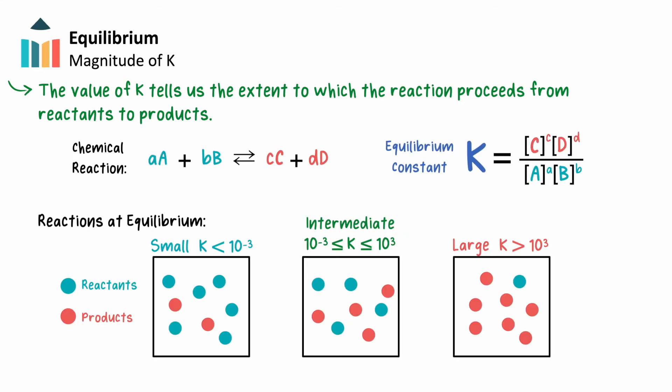Let's see extremes of this visually, with particle representations of exaggerated K values. When K is small, meaning less than 10 to the negative third, we see a lot more reactants than products at equilibrium. A reactant-favored reaction will hardly proceed, with very few products actually made.